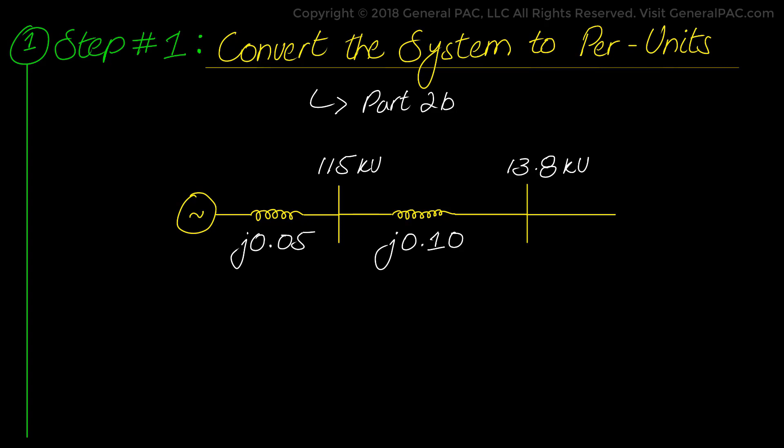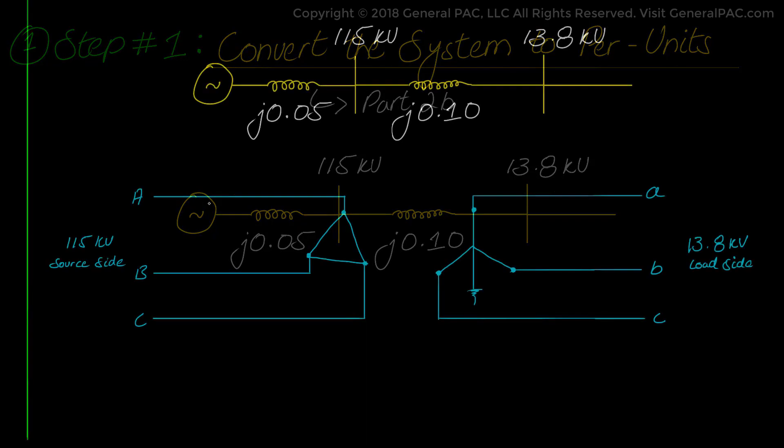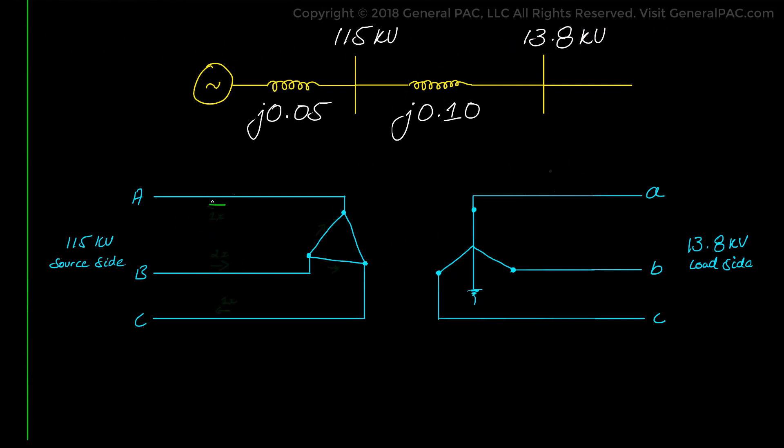Before we draw the converted sequence network diagram, let's take a look at the type of faults in hand. The phase-to-phase fault on the 13.8 kV system should look something like this. Let us ignore the 1x and 2x current on the high voltage side and instead focus on the low voltage side of the transformer.